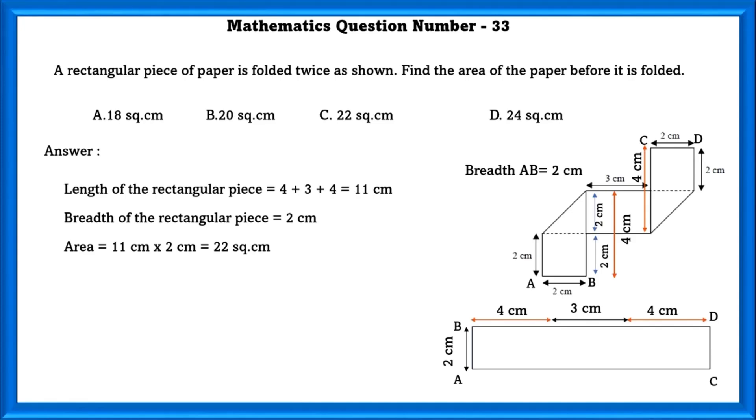The breadth of the rectangular piece is equal to 2 cm. So area is equal to 11 cm × 2 cm which equals 22 sq cm.